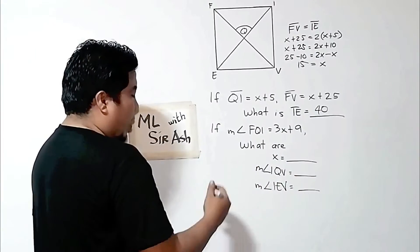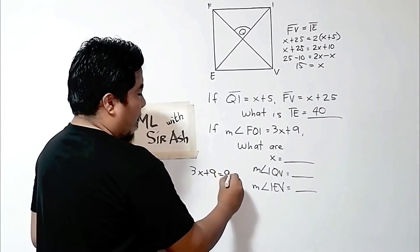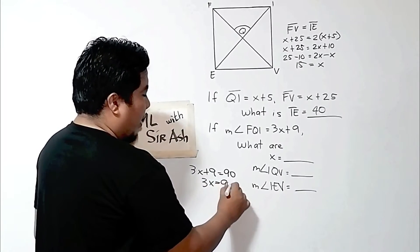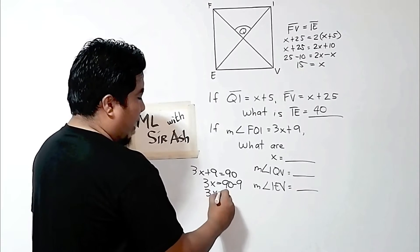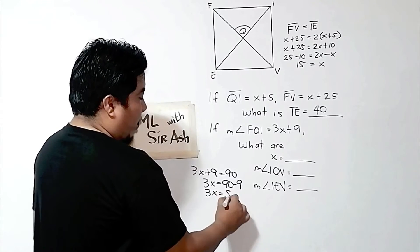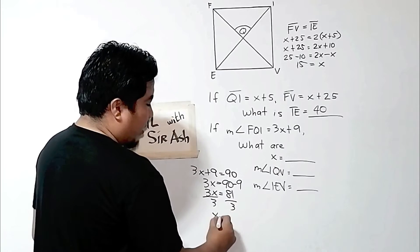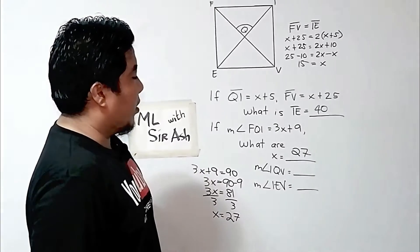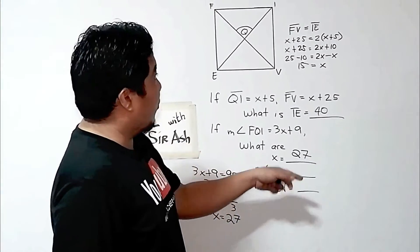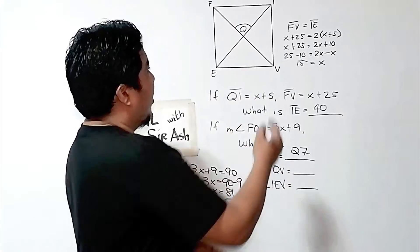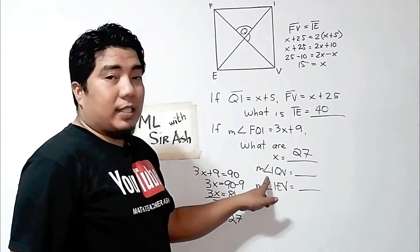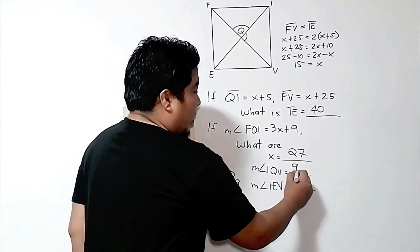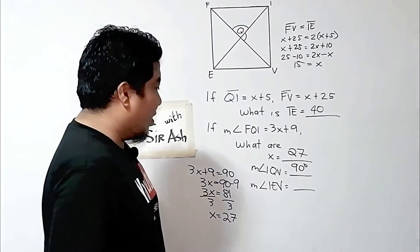We can equate 3X plus 9 to 90 degrees and solve for the value of X. Transposing the 9 gives us 90 minus 9, so 3X is equal to 81. Dividing both sides by 3, X is equal to 27. The next question is: what is the measurement of IQV? Since this is still a perpendicular relationship, the measurement of IQV is 90 degrees.